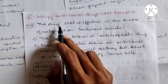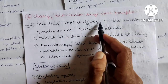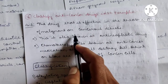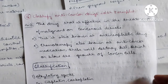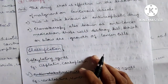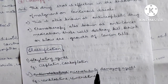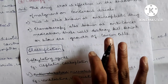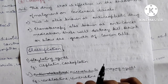Question 16: Define and classify anti-cancer drugs with examples. The definition: a drug that is effective in the treatment of a malignant or cancerous disease. These are also known as anti-neoplastic drugs or chemotherapy — also known as anti-cancer medication. These will destroy, kill, shrink or slow the growth of cancer cells.